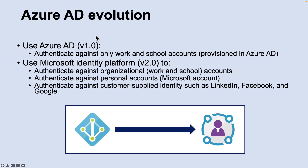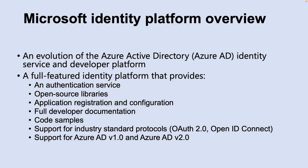Let us look into Azure AD evolution. Until recently, most developers have worked with Azure Active Directory version 1.0 platform to authenticate work and school accounts by requesting tokens from the Azure AD version 1.0 endpoint using ADAL, Azure Portal for application registration and configuration, and Azure AD Graph API for programmatic application configuration.